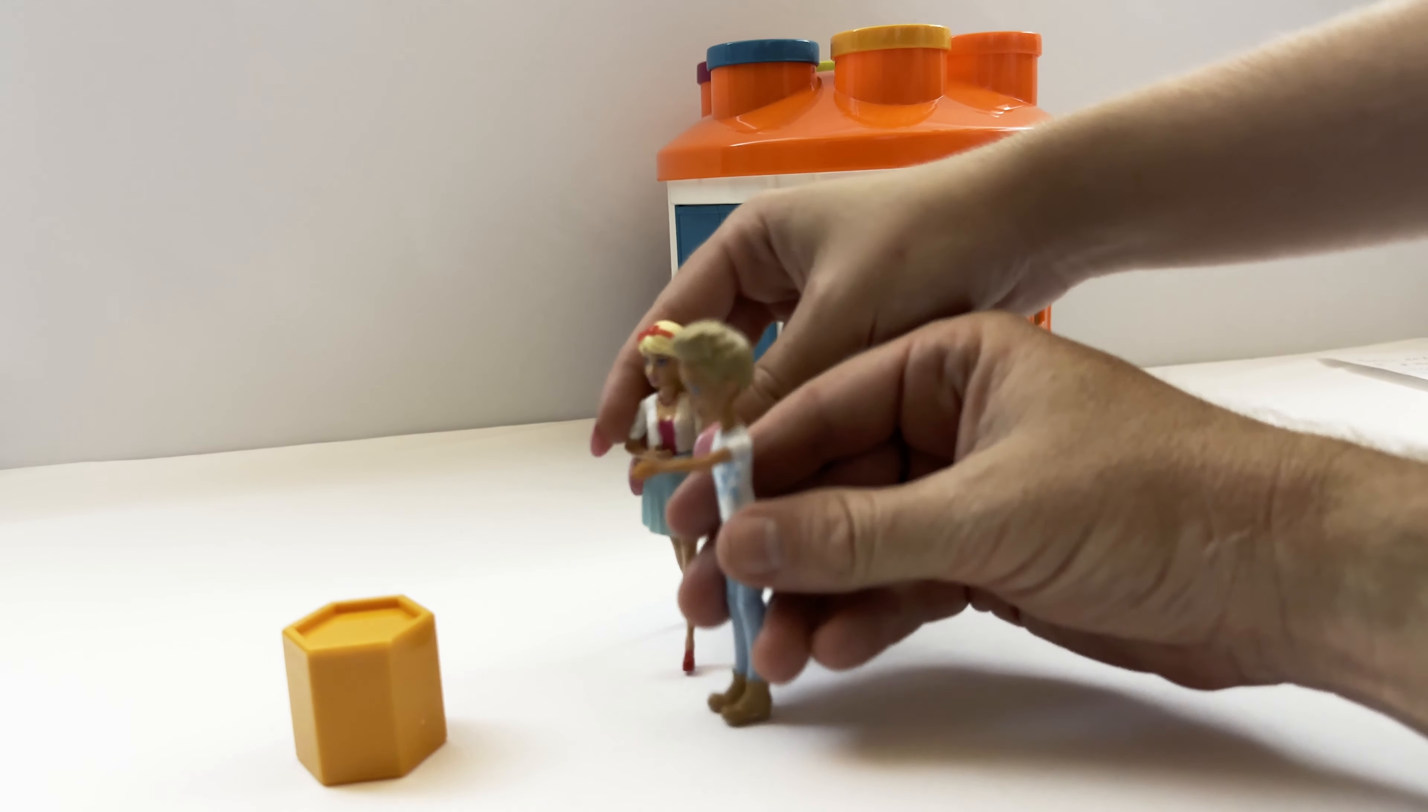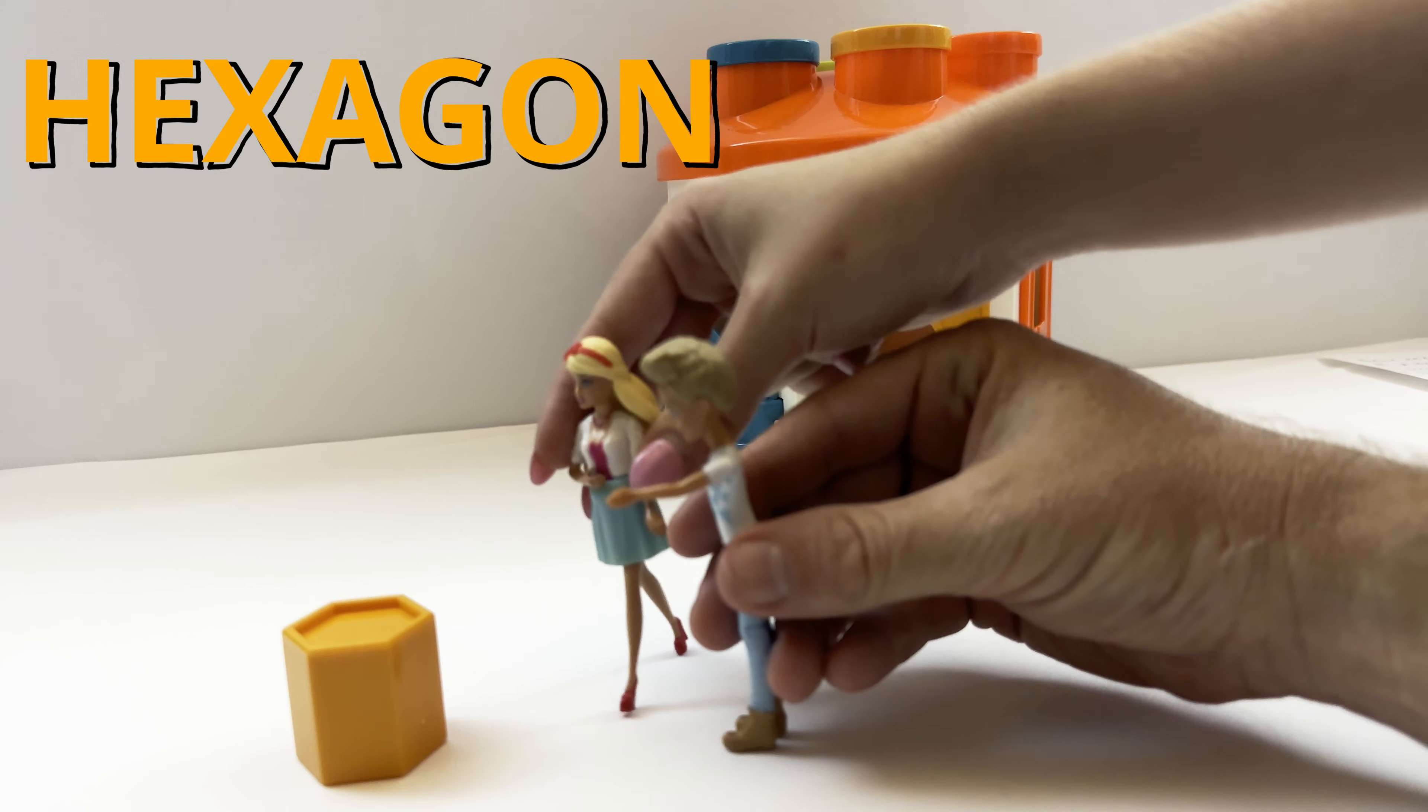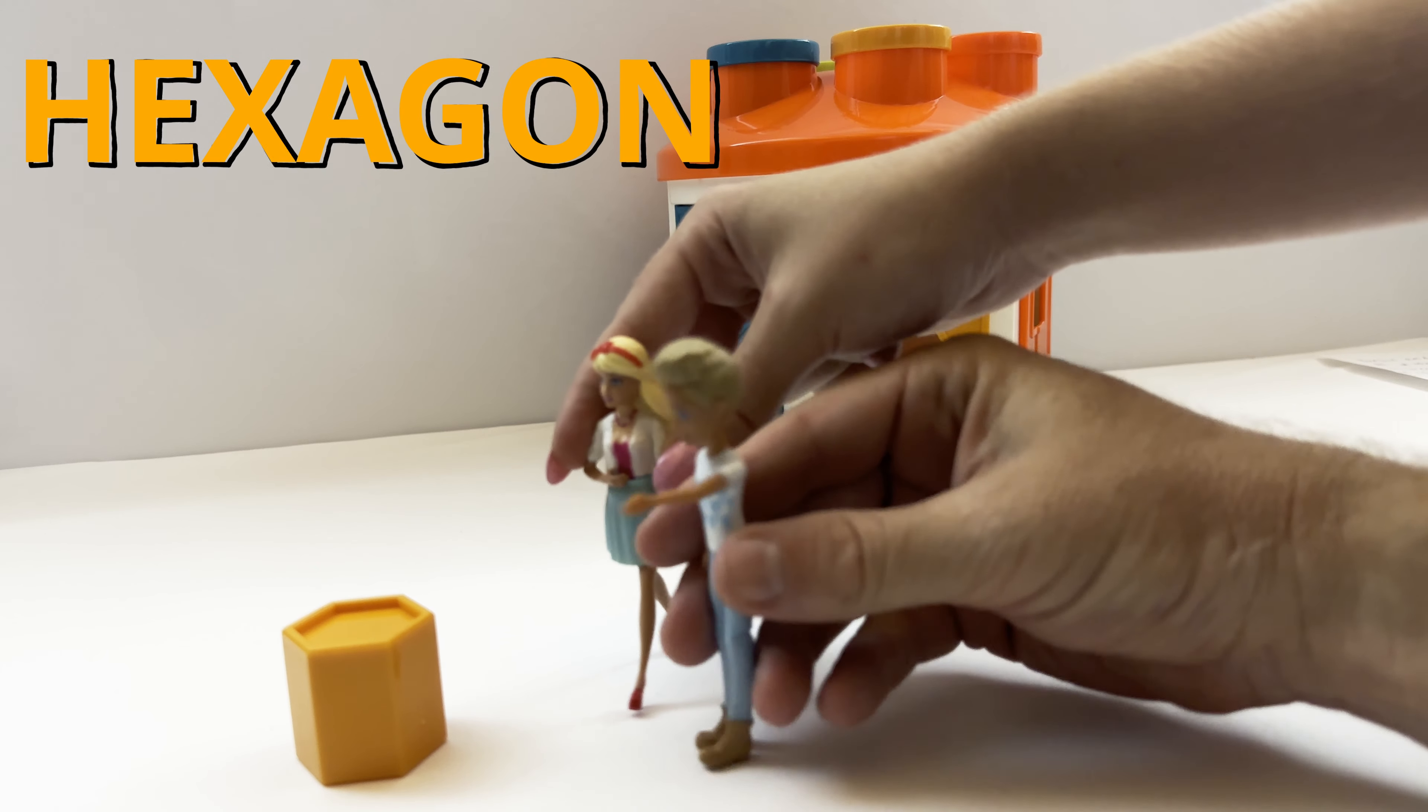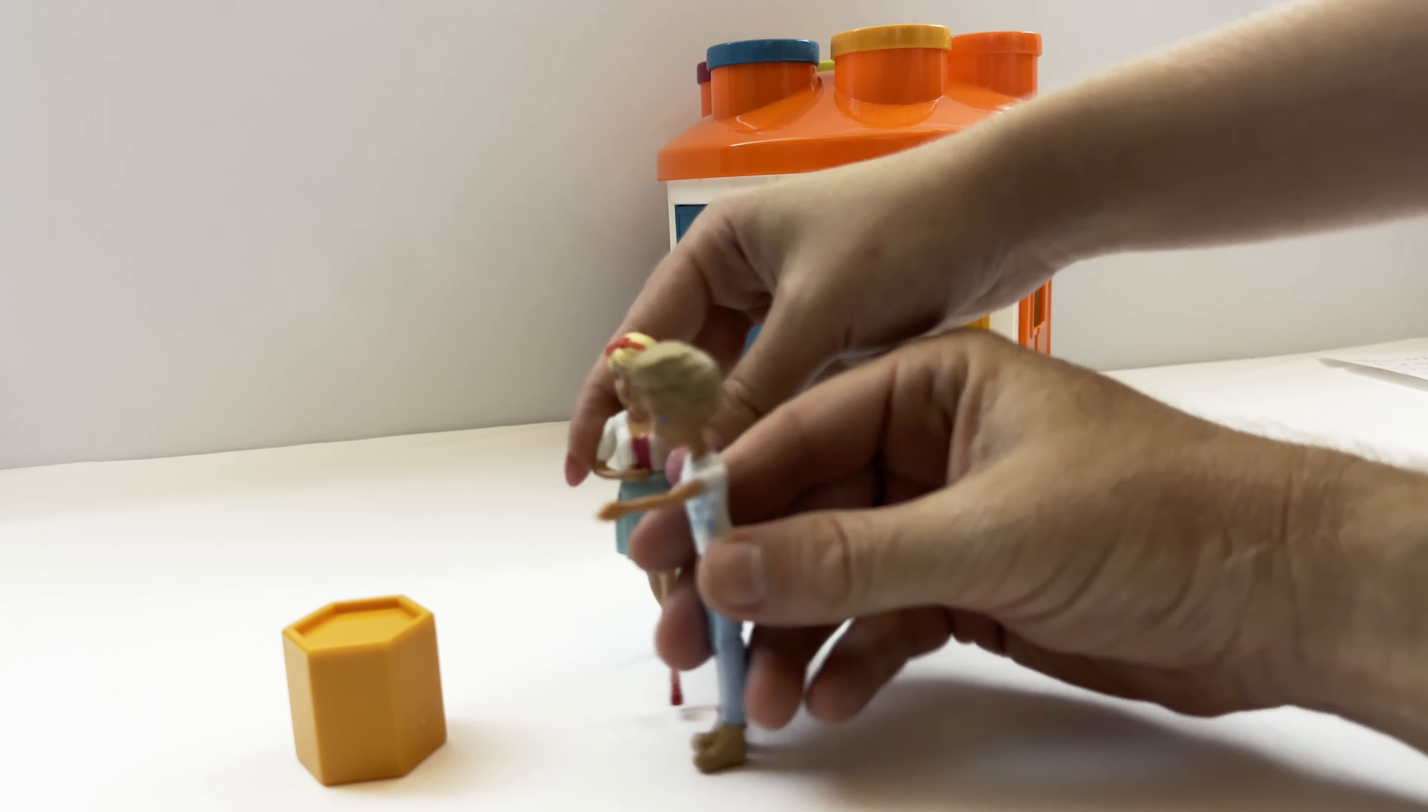Holy moly, Ken, our last shape is a hexagon. It's an orange hexagon, and it completes the house.